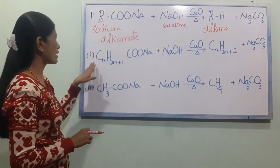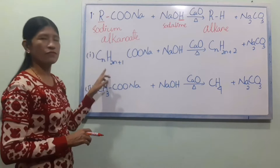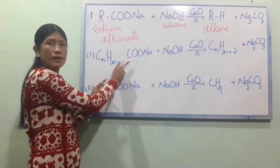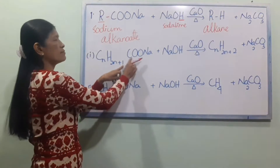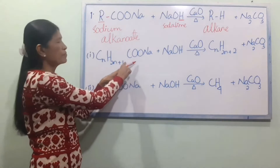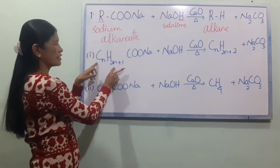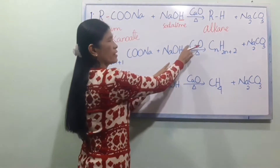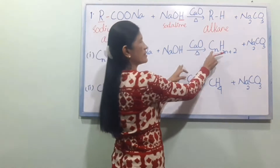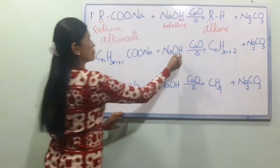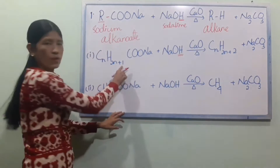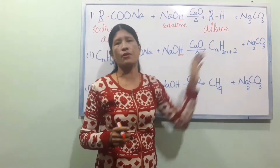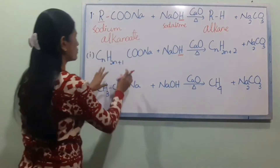We use the general formula CnH2n+1 for the alkyl group, and CnH2n+2 is the general formula for alkanes. So if you want the complete alkane, you use CnH2n+2. This is the standard general formula for all alkanes.